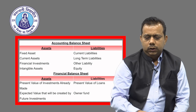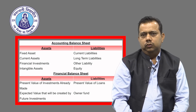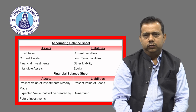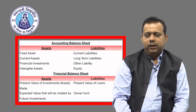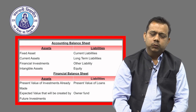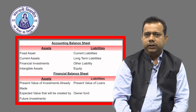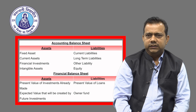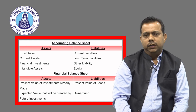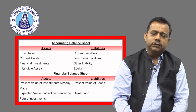Now let us look at the accounting balance sheet versus the financial balance sheet. The accounting balance sheet has current assets and fixed assets on the asset side, and current liabilities, long-term liabilities, and shareholder funds on the liability side. It is typically on historical values. Although under IND AS we are supposed to calculate certain assets and liabilities on a present value basis, in India a large part of fixed assets are still recorded at historical values.